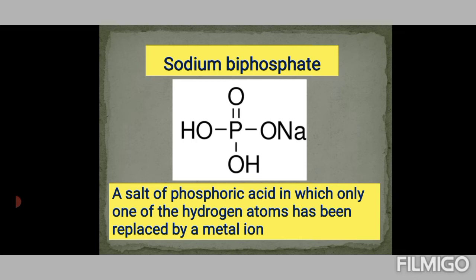A biphosphate can refer to any phosphoric acid in which one hydrogen atom has been replaced — for example, calcium biphosphate or potassium biphosphate, just like sodium bicarbonate has one carbon. However, this nomenclature also includes diphosphates and pyrophosphates, such as adenosine diphosphate, which can also be called adenosine pyrophosphate. Traditionally, though, ADP and similar organic molecules are called diphosphates.